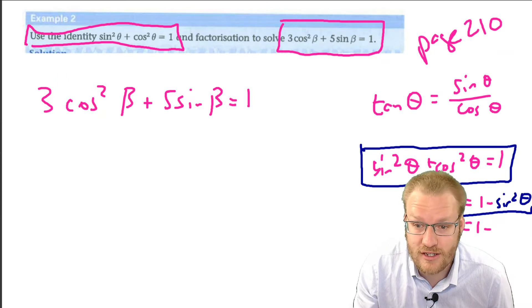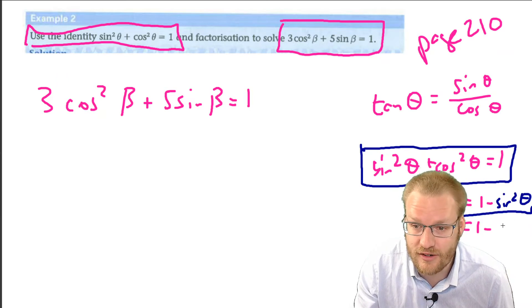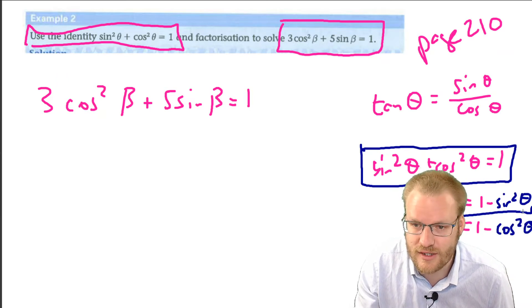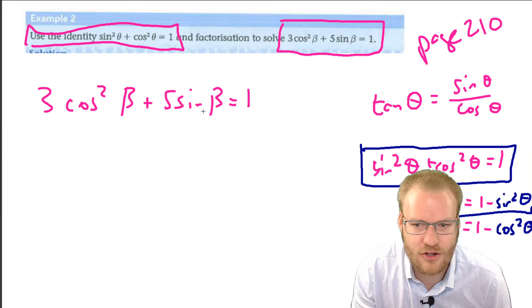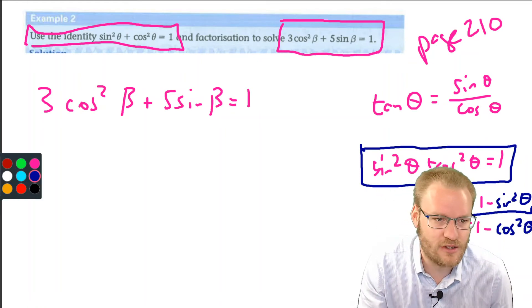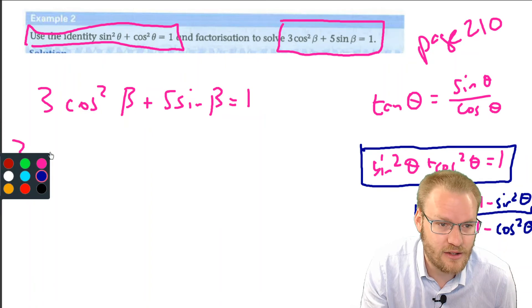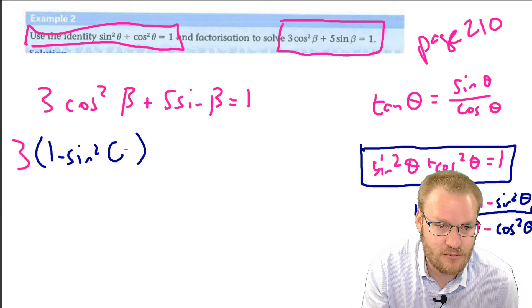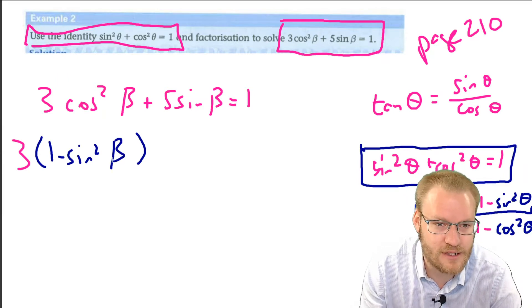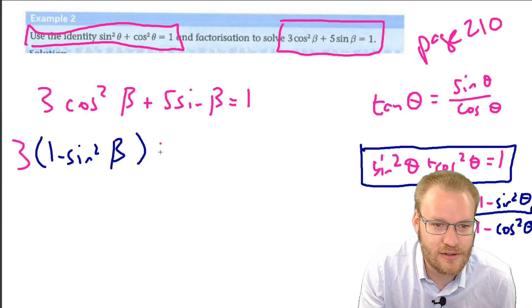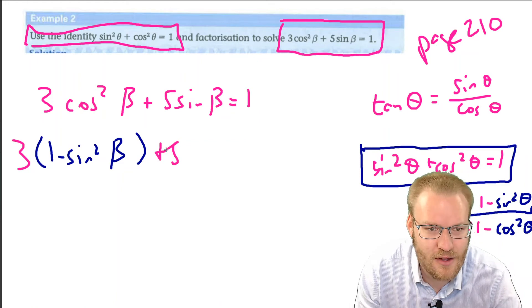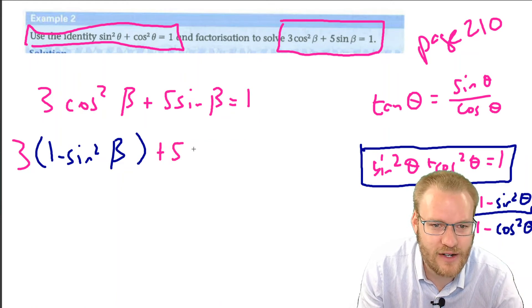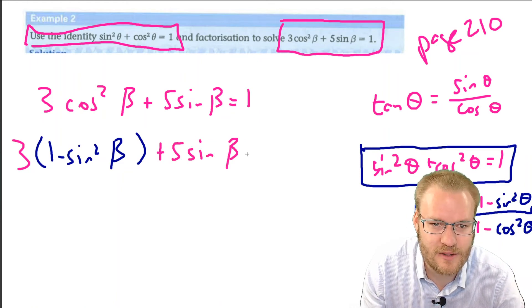As I said before, it's useful if you've written both variations so you can look at it and go, cos squared equals one minus sin squared. So we're going to write 3 times (1 - sin²β), although I think it should be beta, plus 5sinβ = 1.